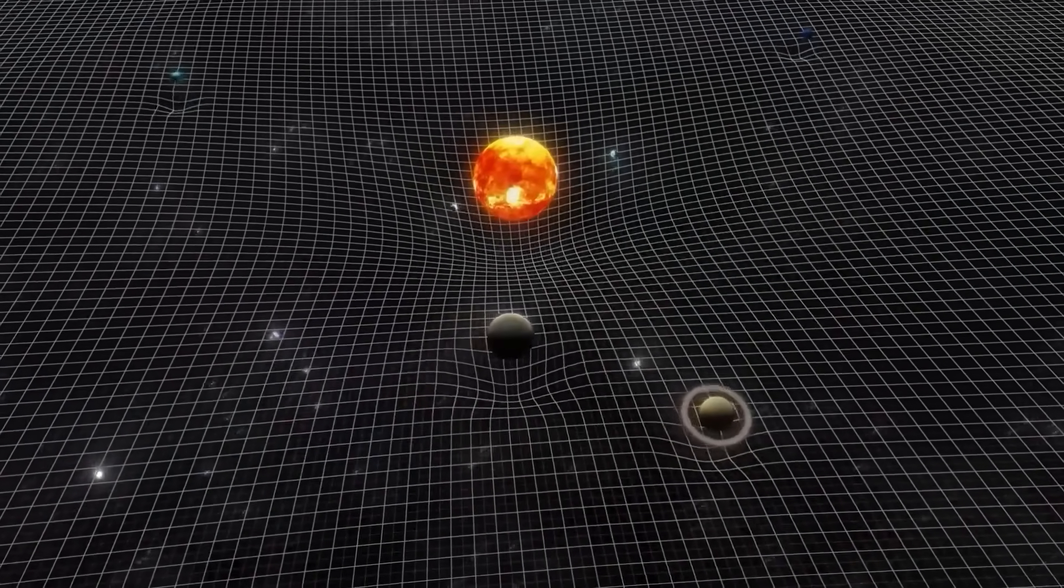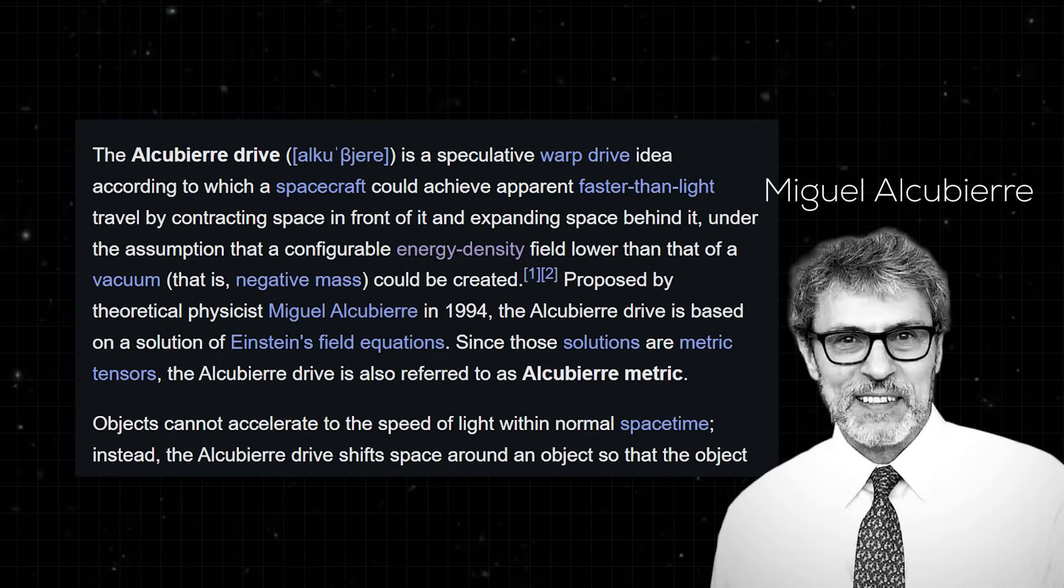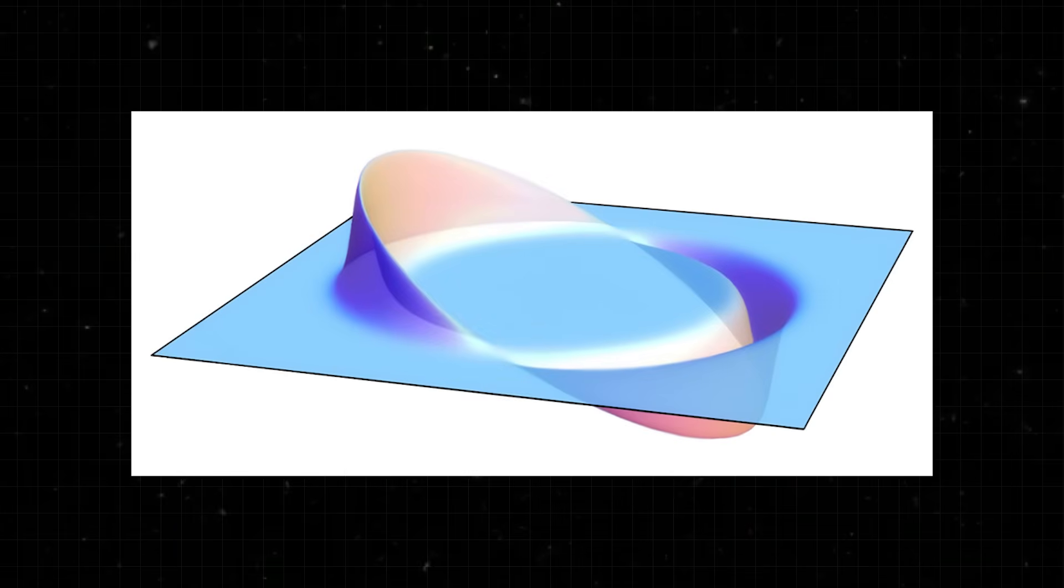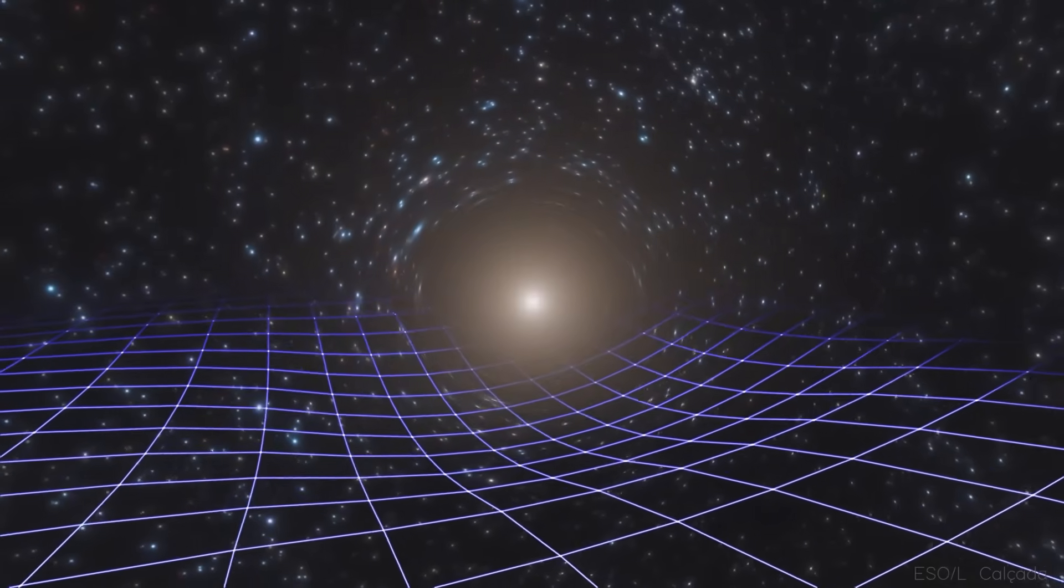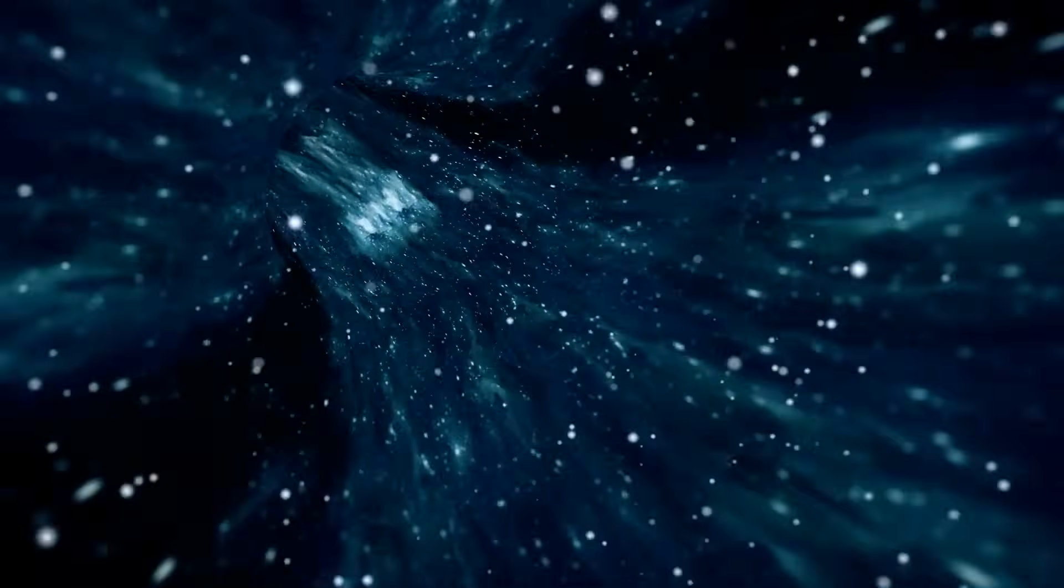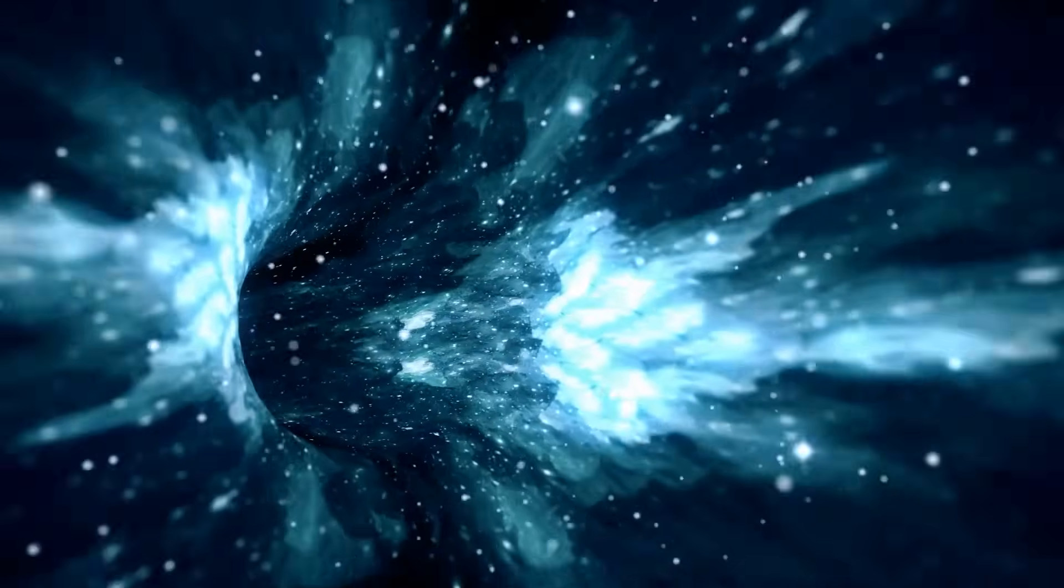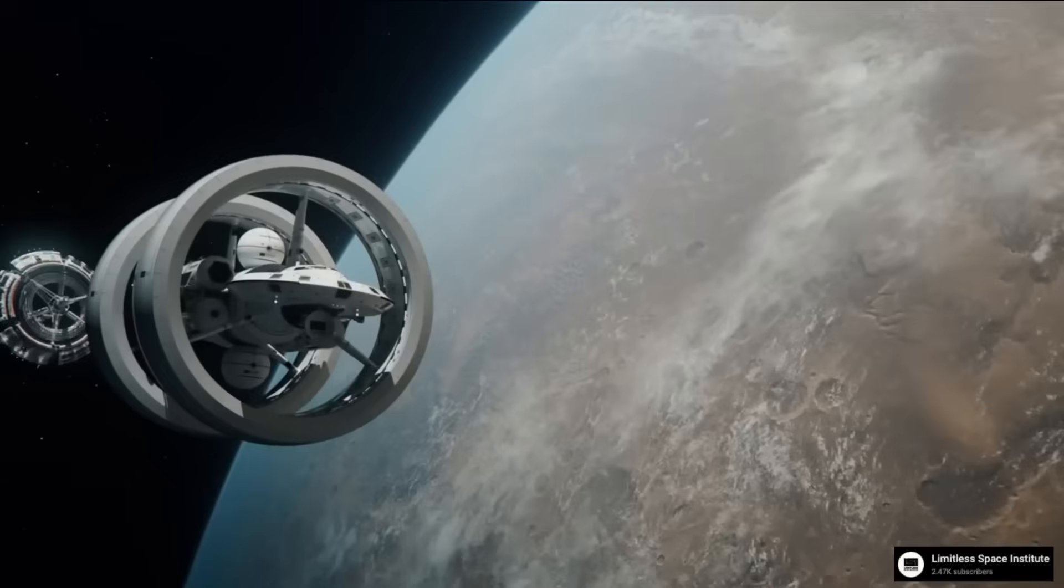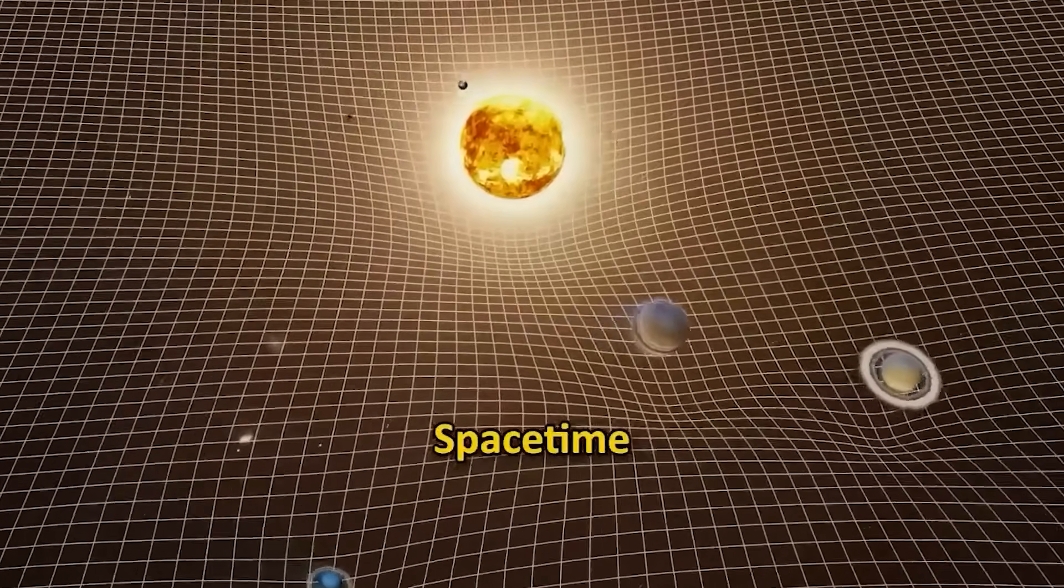This is where the idea of warp drives enters the picture. In 1994, Miguel Alcubierre proposed a solution to Einstein's equations that looked, mathematically, like a warp bubble. A small region of space-time that contracts in front of a spacecraft and expands behind it. Inside this bubble, the ship could remain at rest relative to the local space-time, while the bubble itself rides a wave through the universe, effectively allowing apparent faster-than-light travel without technically violating relativity.